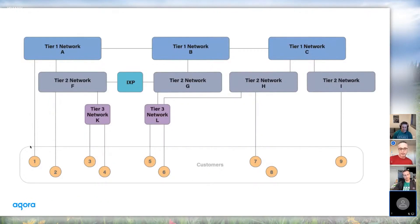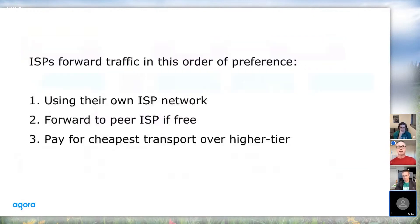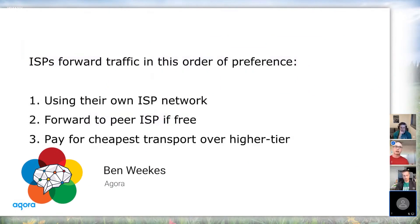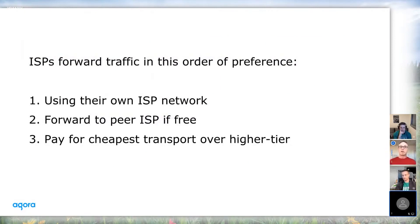I'm now going to explain what's going on on the internet — the stuff I wasn't overly aware of in the past. At the bottom, these yellow circles are people connected to the internet, like me and Vanith at home. We're generally using tier three ISPs, and those tier three ISPs are using tier two ISPs, which tend to cover bigger regions and countries. They in turn are using tier one ISPs, which are global in scale. But these are run as businesses by different companies, with their own costs and in competition with each other. It turns out that ISPs' priorities for routing traffic are to go over their own network first, then use free peering with other ISPs, and only then — if they have to — to pay for transport.